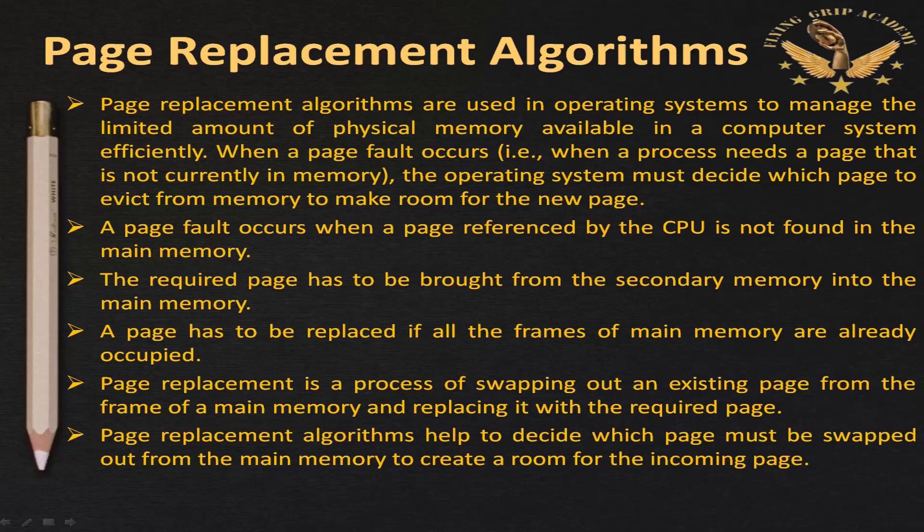We have two different types of hard disk: HDD and SSD. When a page fault occurs, a process needs a page that is not currently in memory. If the requested page is not available in RAM, the operating system must decide which page to evict from memory to make room for the new page. A page fault occurs when a page referenced by the CPU is not found in main memory — it has to be fetched from the hard disk and allocated in RAM.